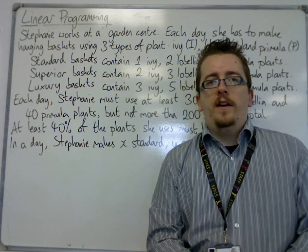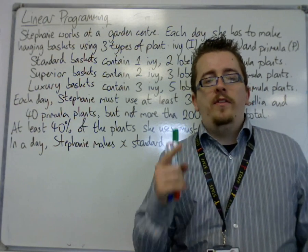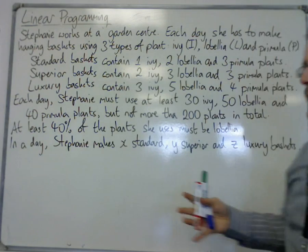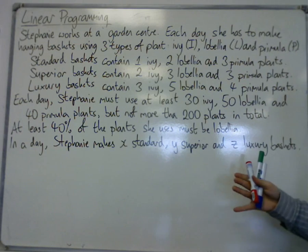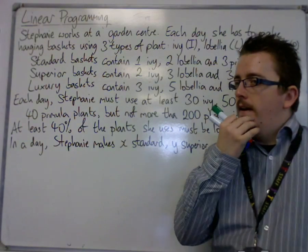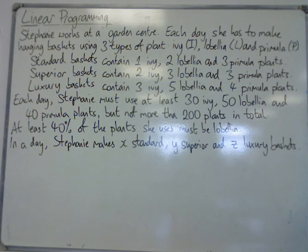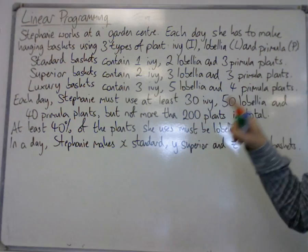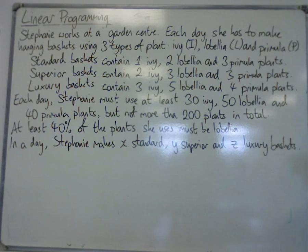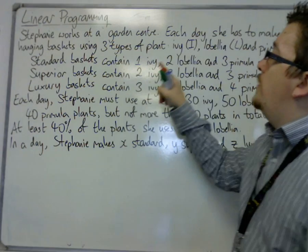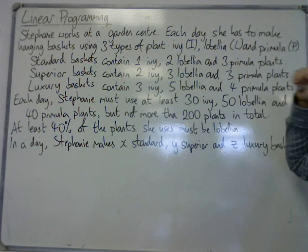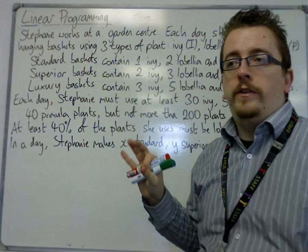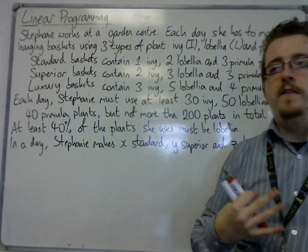We're going to look at another linear programming problem, and in this case we have a lot more words. This would take up at least half a page of writing on the exam paper. In this situation we have Stephanie, and she works at a garden centre, and each day she has to make hanging baskets using three types of plant: Ivy, Lobelia, and Primula. There are some conditions that have been put on the number that she makes.